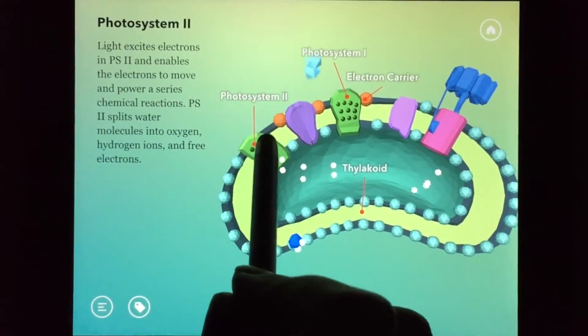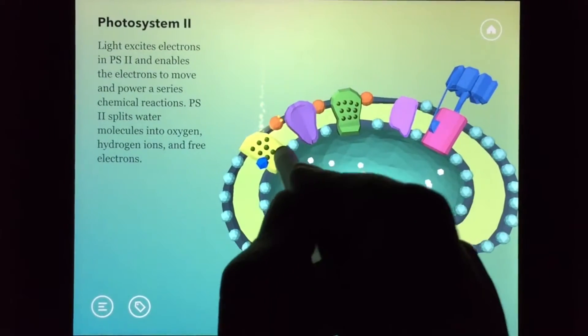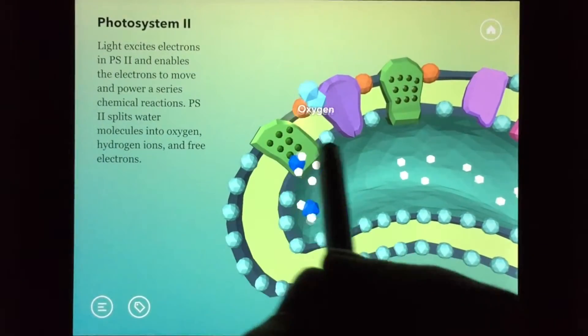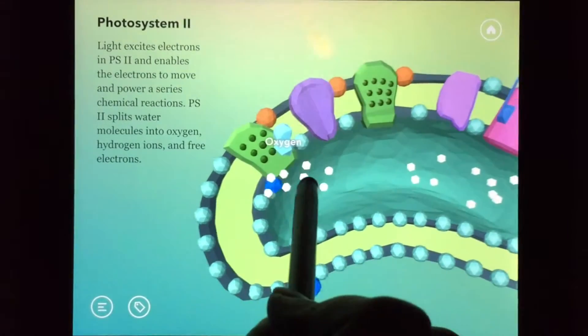Light-dependent reactions begin in photosystem 2. When sunlight hits chlorophyll in photosystem 2, it excites an electron and raises it to a higher energy level. The electron is passed down the electron transport chain.